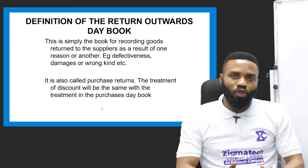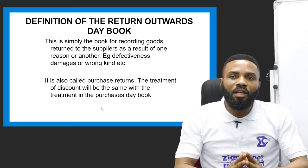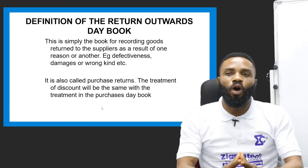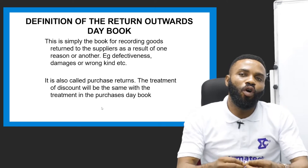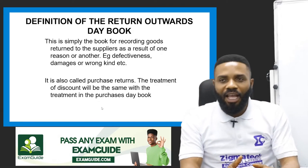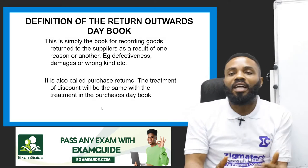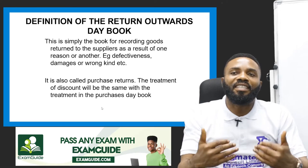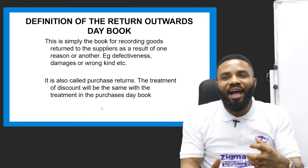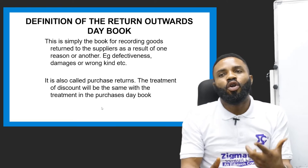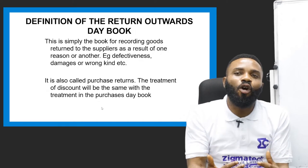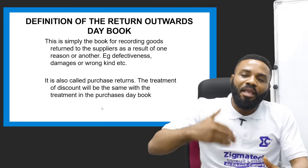The returns outwards day book is simply the book for recording goods returned to suppliers. Goods are returned back to the supplier for one reason or another. One of the reasons that can make us return goods is defectiveness — some goods are defective in nature, meaning they are below standard. When you buy an item that is below standard, there is a need to return it back to the seller or supplier.